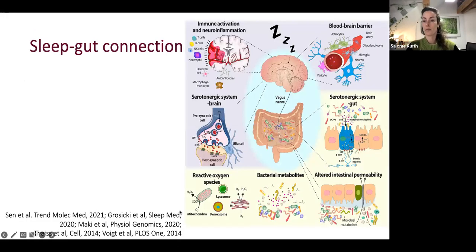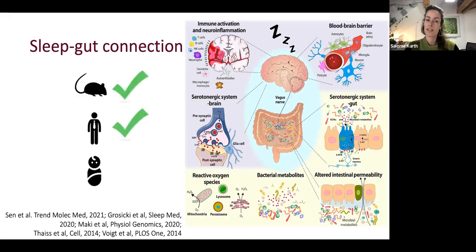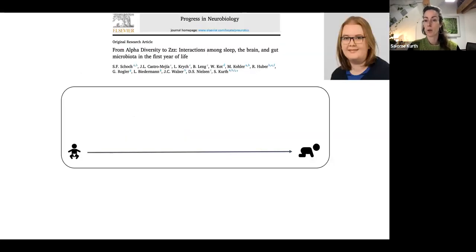We of course are interested in sleep. Research is growing that there is indeed a sleep-gut connection in mice or rodents. It has been shown in adults, it's increasingly shown, but nothing has been known in babies. Because on the one hand, there's so much happening in the sleep regulation in the early years of life and so much happening in the buildup of the microbiome. Usually it takes up to three years for adult-like microbiome to develop. It would be very interesting to see what that connection is.